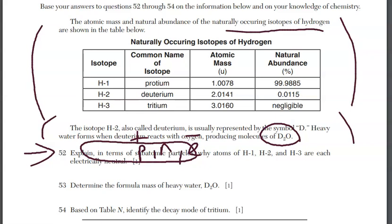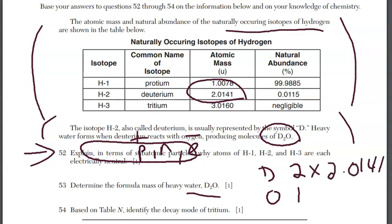For question 53, you're asked to determine the formula mass of D₂O as opposed to H₂O. We need the atomic masses — the atomic mass for deuterium is given in the table, and then we're going to need the atomic mass for oxygen from the periodic table. First, list the different elements in the compound and the number of times they appear in the formula.